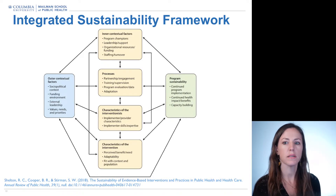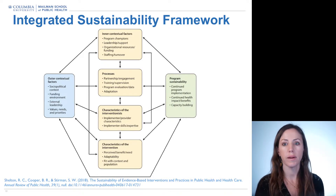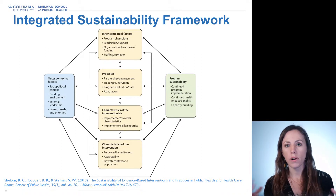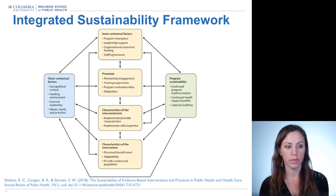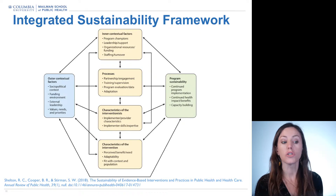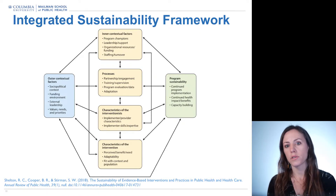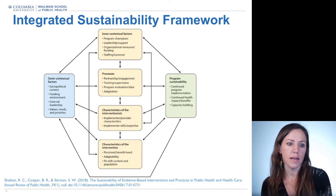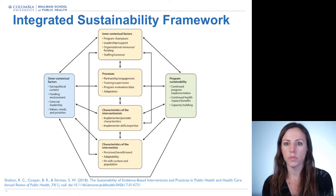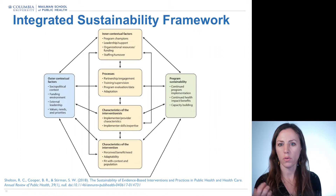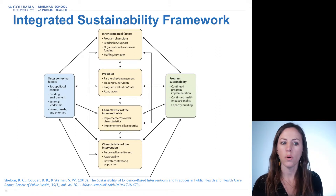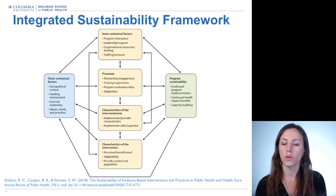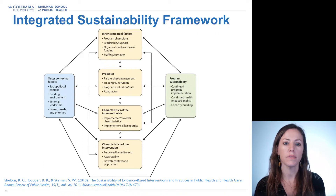A lot of the levels are very consistent with how we think about levels in the Consolidated Framework for Implementation Research. So again, outer contextual or policy-level factors include the broader funding environment, external leadership in place, and the values, needs, and priorities at a larger political or social level — and those factors seem to matter for sustainability across different settings. In the inter-organizational context: are there program champions? Is there leadership and support on board? What are the organizational resources or capacity in place to support the program over time? And is there staffing, turnover, or attrition? These are factors that in the literature across settings suggest to matter for sustainability.